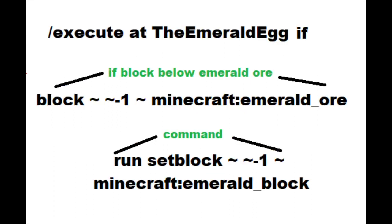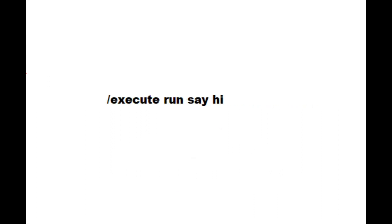The second step is the 'if' part. This is used to define what needs to happen before the command is run. For example: execute at the emerald egg, if block below is emerald ore, then set block below emerald block. This will cause any emerald ore the emerald egg stands on to be replaced with an emerald block. And finally, the 'run' part is what you say before you type what command you want to happen.